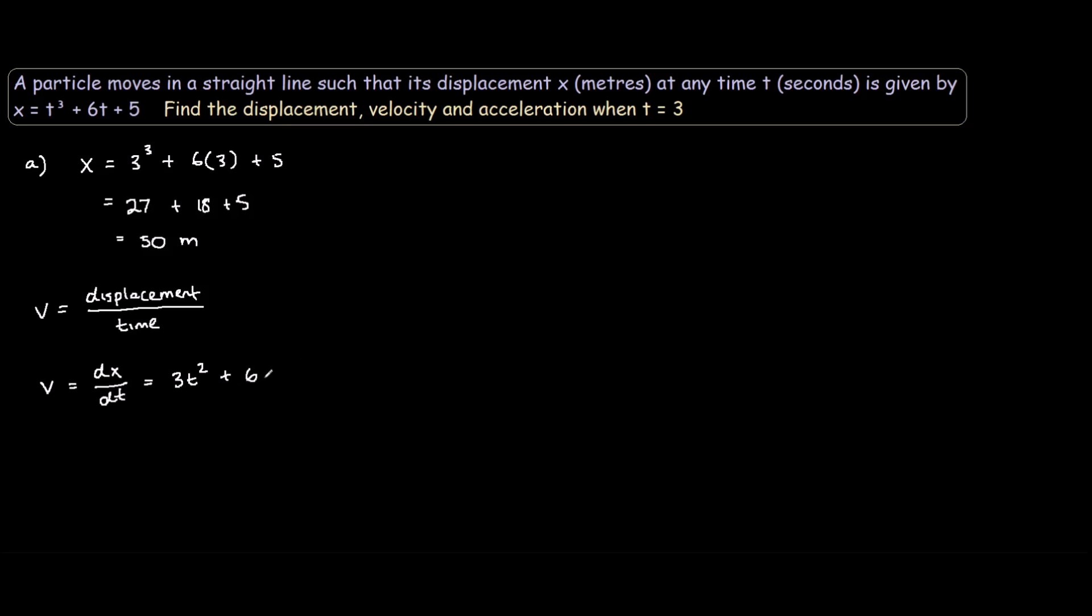So that's our velocity equation. Now we can substitute t equals 3 to find the velocity when t equals 3. So that would be 3 times 3 squared plus 6, which is 3 times 9, 27 plus 6. So the velocity would be 33 meters per second.